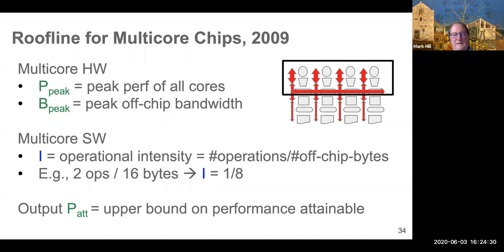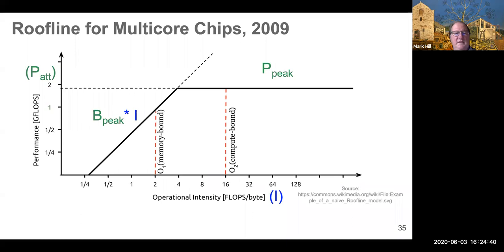And then from that, we're going to visually show an upper bound on the performance attainable. You may not get it, but you shouldn't be able to get more than it. And this is called Roofline because the plot looks like a Roofline.